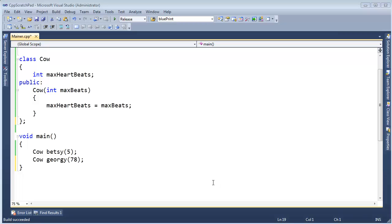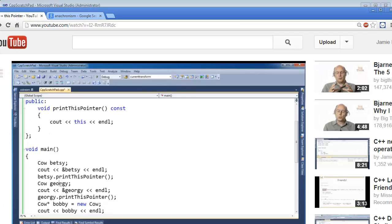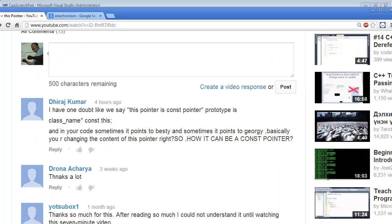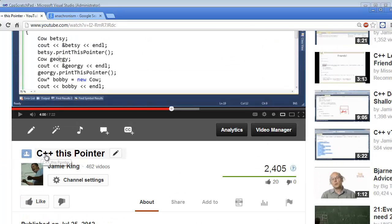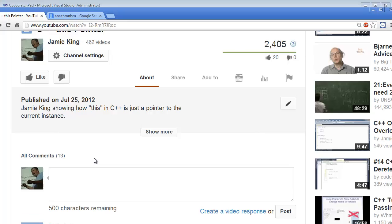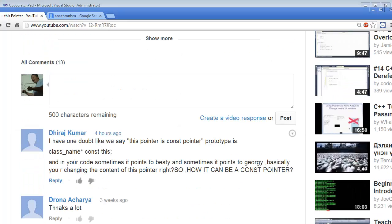Okay, this is the second video of two videos I'm doing in response to a comment I received on this C++ this pointer video. Mr. Kumar said, I have one doubt, like we say, this pointer is a const pointer, class name star const this. And in your code, sometimes it points to Betsy, and sometimes it points to Georgie. Basically, you're changing the content of this pointer, right? So how can it be a const pointer?